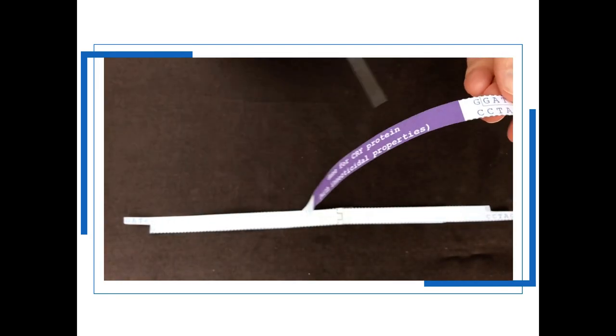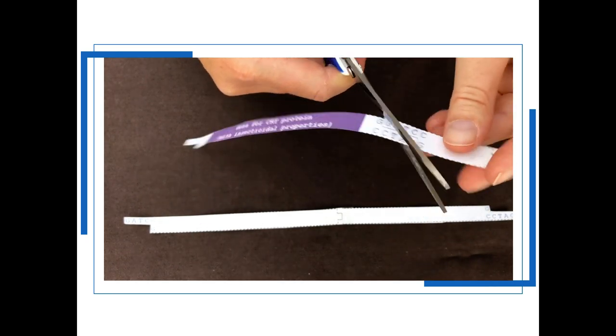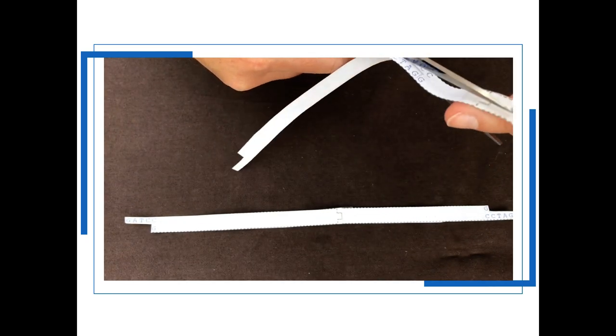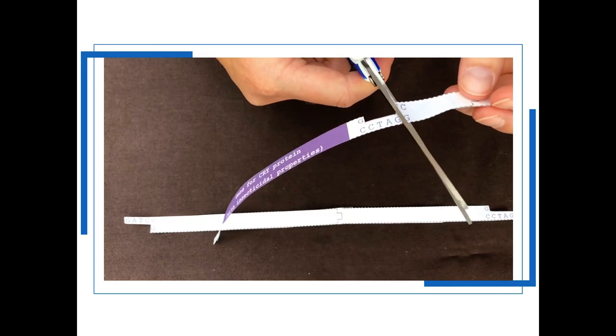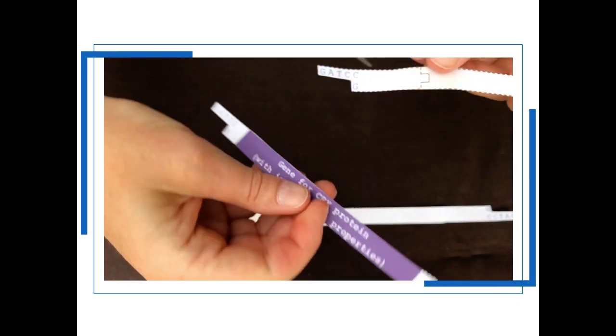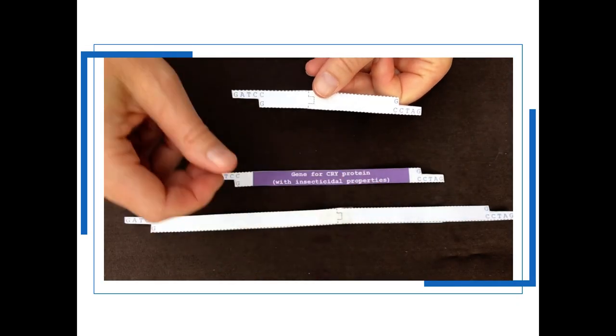Because in the bacterial chromosome there are two restriction enzyme sites, you can use them to cut either end of the gene of interest which is the gene for the cry protein so that you get two separate linear strands from the bacterial chromosome: the one with the gene of interest and the one for the rest of the bacterial chromosome.